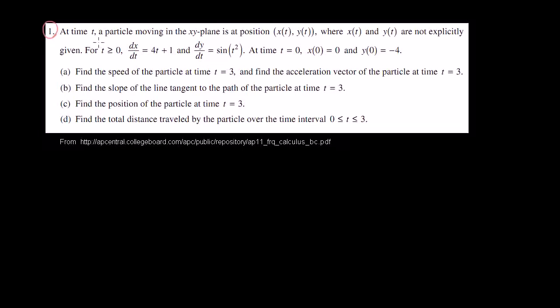Problem number one. At time t, a particle moving in the xy-plane is at position x of t, y of t, where x of t and y of t are not explicitly given. For t greater than or equal to 0, the derivative of x with respect to t is 4t plus 1. The derivative of y with respect to t is sine of t squared. And at time t equals 0, x of 0 is 0, and y of 0 is negative 4.